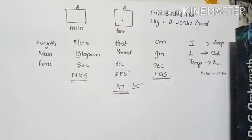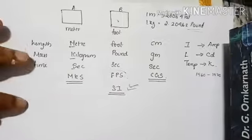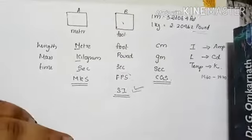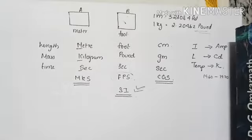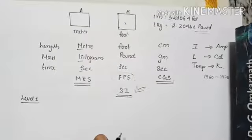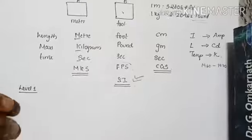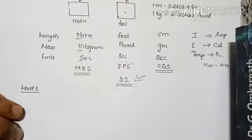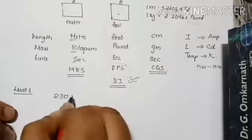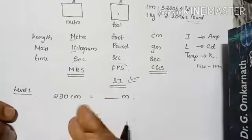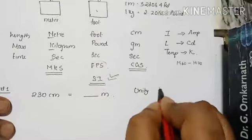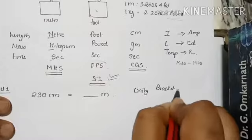Now we are going to do numerical problems. Please have a close look at how I solve them — I'll give you step-by-step explanations at a slow pace. We'll start at a very basic level with unit conversions. The first question is converting 230 centimeters into meters. You might know the answer is 2.3 meters, but I want to introduce a method called the unity bracket method.